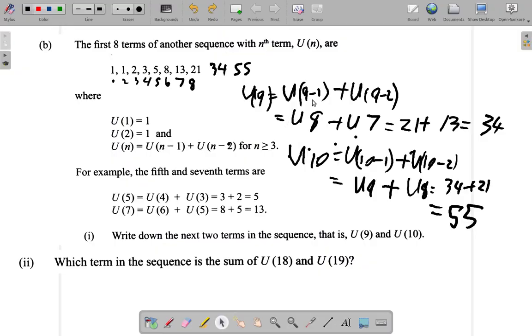Let's see part 2 of 7b. It says which term in the sequence is the sum of U(18) and U(19)?